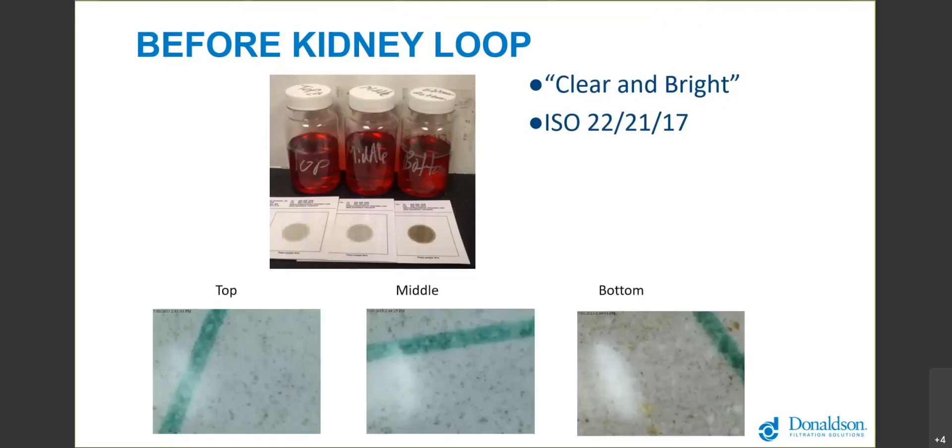We took patch tests of those fuel samples, so we put them onto a filter patch and then evaluated under a microscope. This is about 125 times magnification and you can see there's a lot of debris in there. That green line on this patch represents about a hundred microns in diameter.